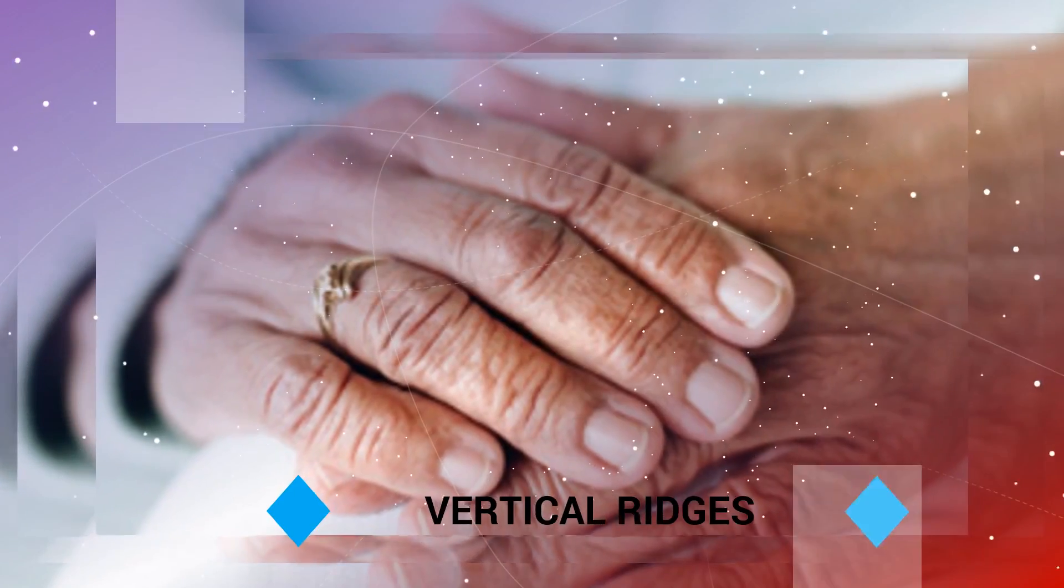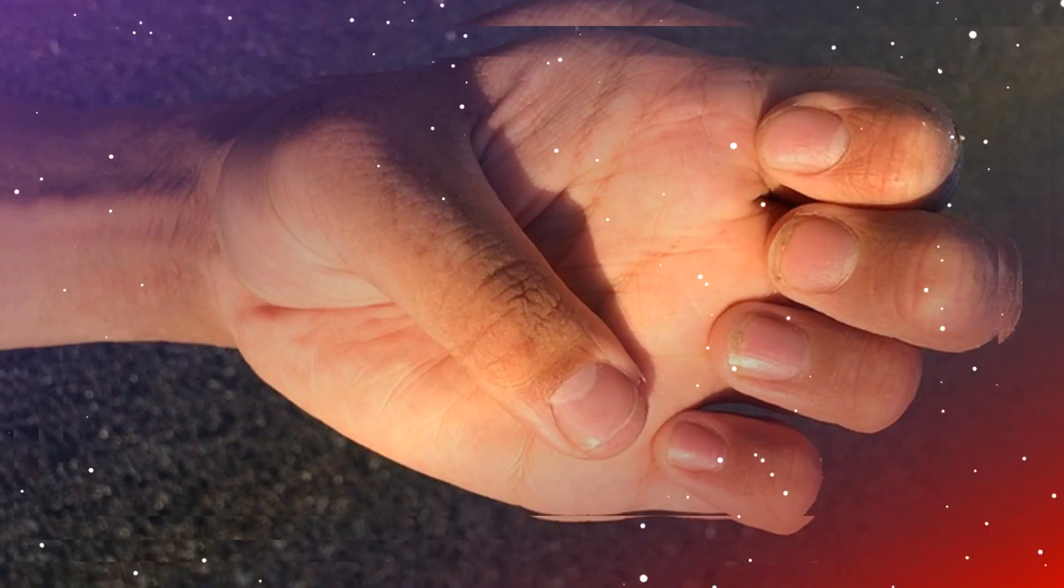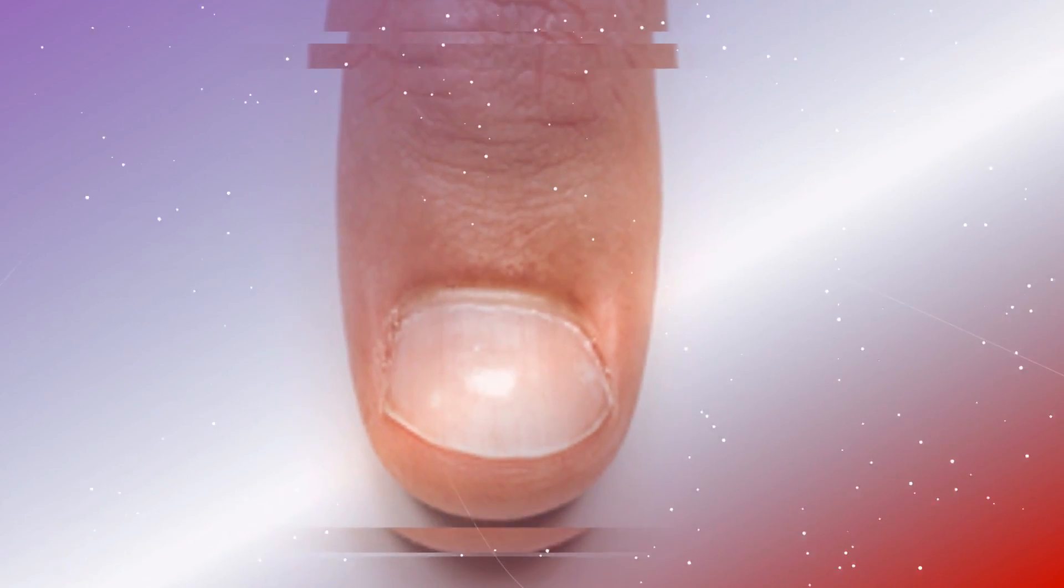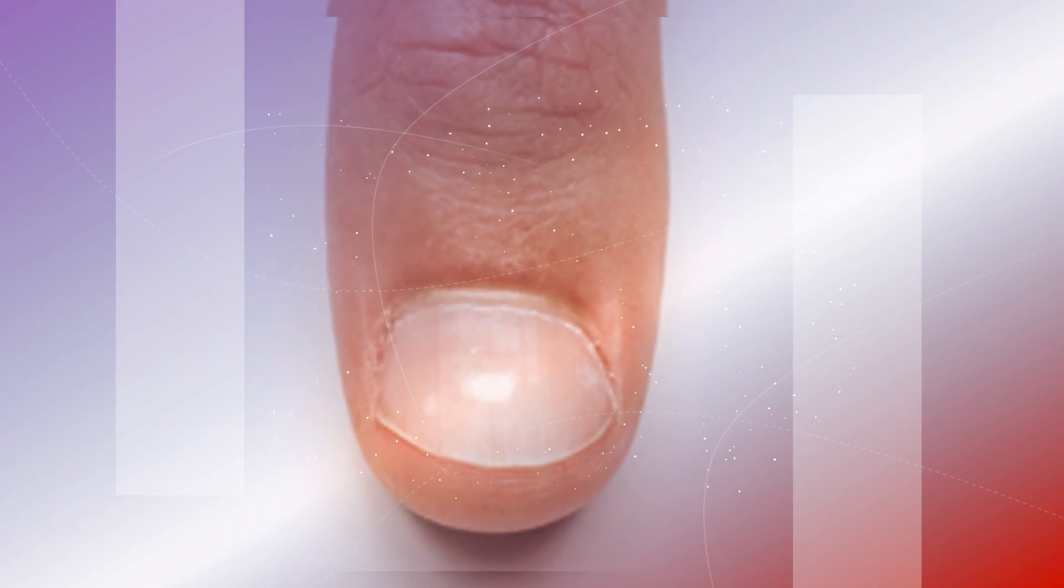6. Vertical Ridges. Vertical ridges are typically a normal sign of aging and are not a cause for concern. They may become more prominent as you get older. In some cases, nail ridges may be due to nutrient deficiencies, including vitamin B12 and magnesium.